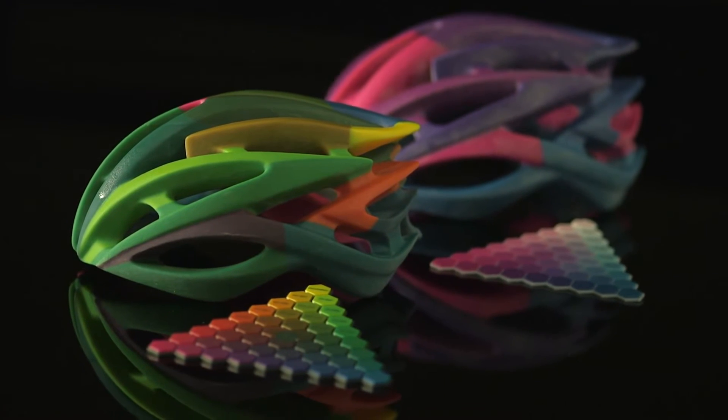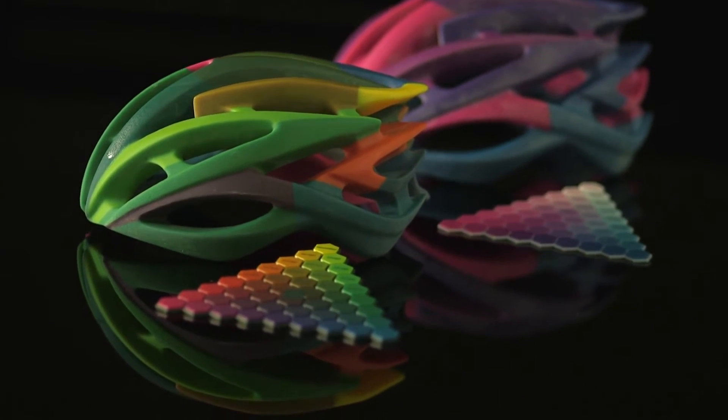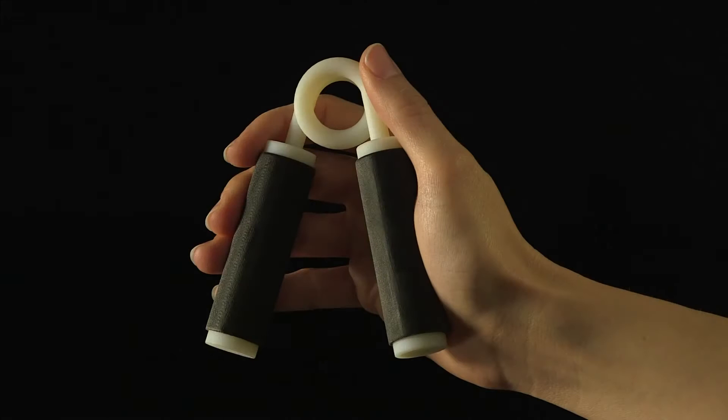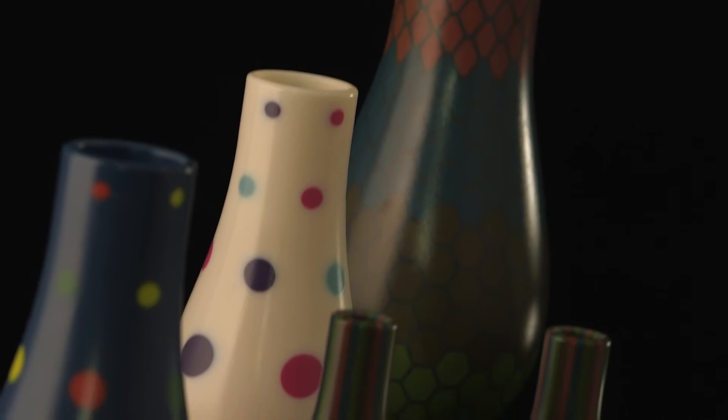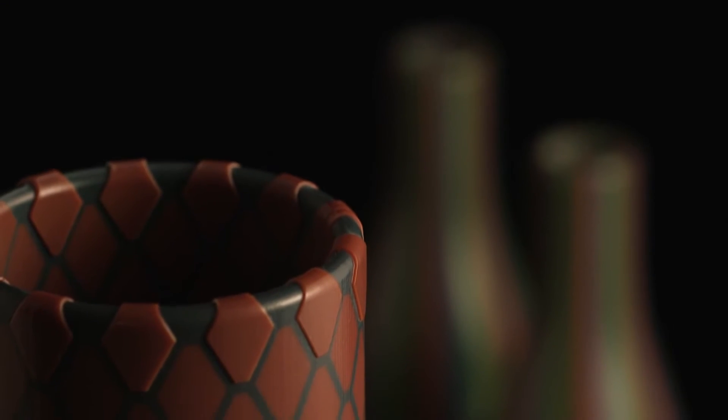You can print digital ABS in the same model with rubber-like components, and you can do all this with PolyJet technology's signature smooth surfaces for astonishing fine detail.